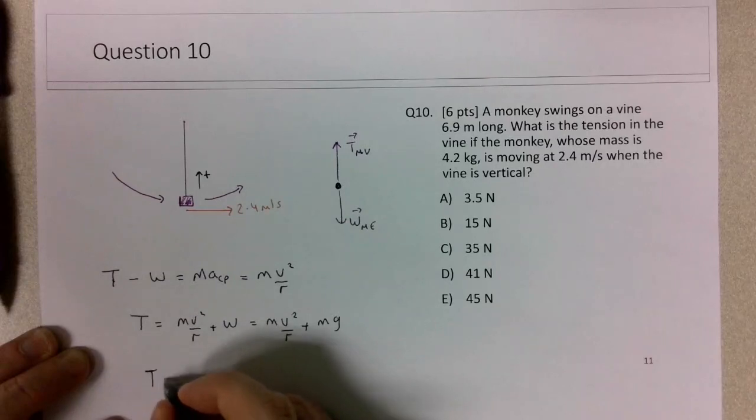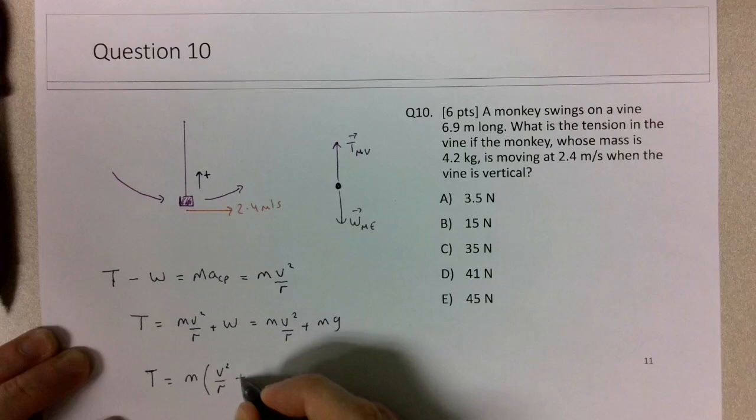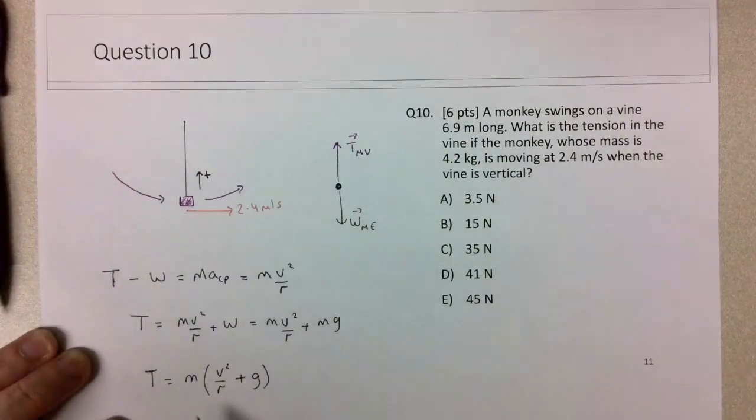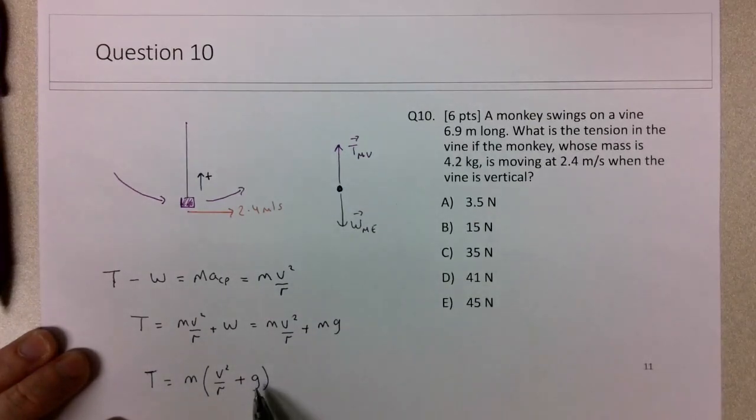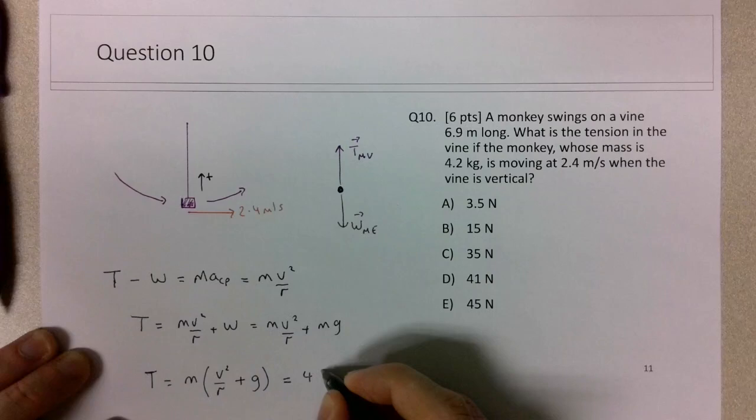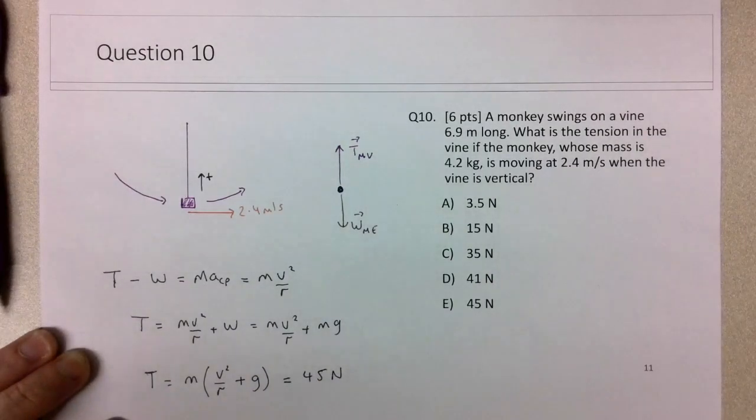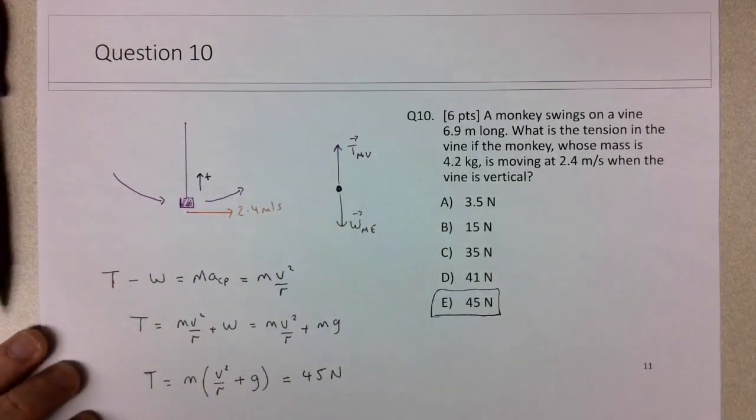So the tension will be equal to—take out that mass term—and then the v squared over r term plus g, and we have all these quantities in the question. M is 4.2, speed is 2.4 meters per second, the radius is 6.9, g is 9.8 meters per second squared, and put those in your calculator, you need to end up with 45 newtons.